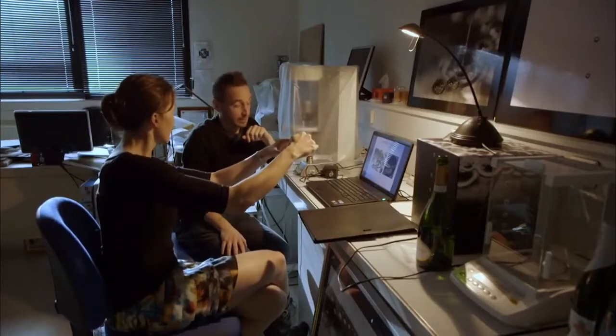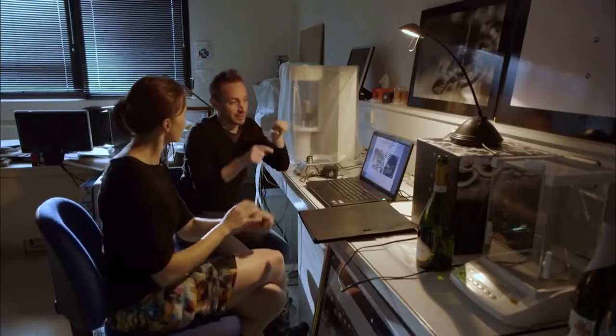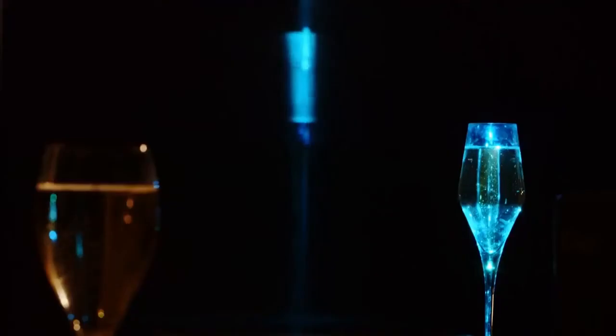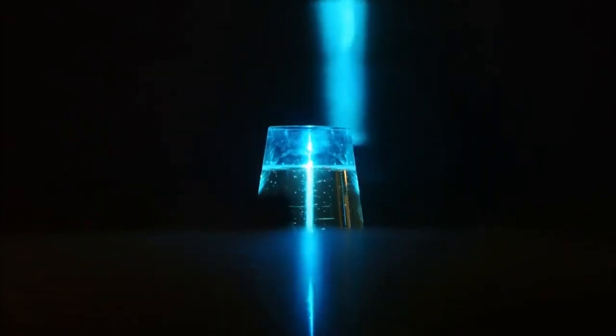So here we have a high-speed photograph of the Champagne jet which is ejected by the bubble and we also have a high-speed film of the process. So this is just as the bubble is just at the surface and it sits there for a little while and then the top, the sort of top of it breaks. Absolutely. And this is what happens next. Then the bubble cavity collapses and when it collapses it can eject a tiny Champagne jet up to several centimetres above the surface.